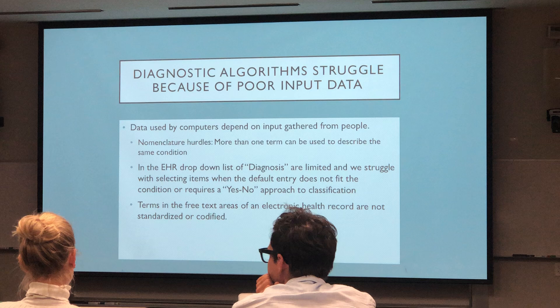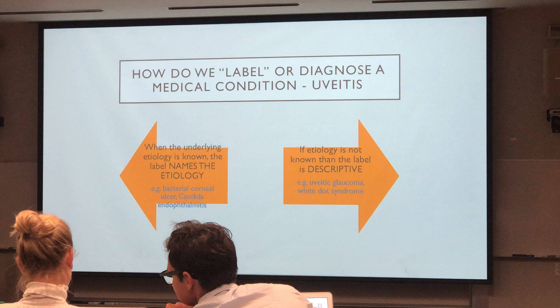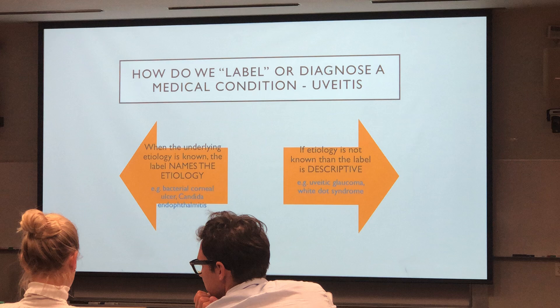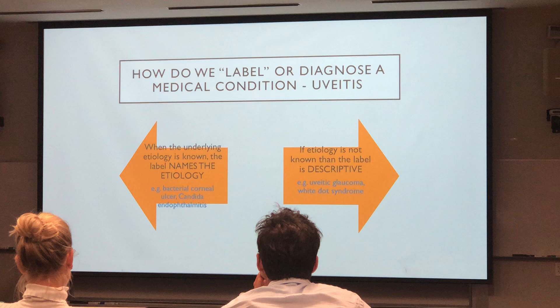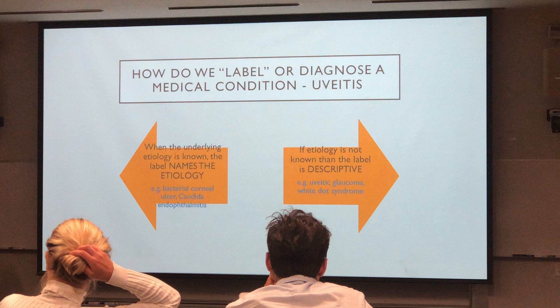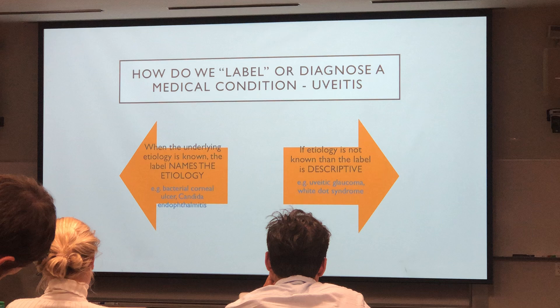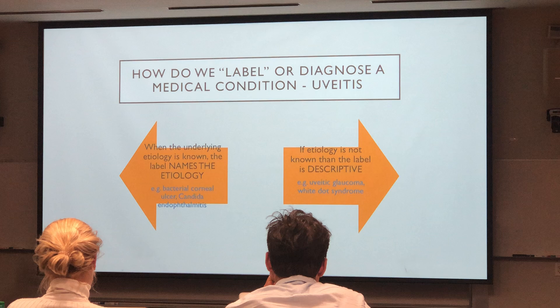So when we make a diagnosis of UBIDs, how do we label a condition? I like to categorize the labeling process in two forms. There's a group of UBID entities where we presume we understand the underlying etiology — we'll say this is a bacterial chorioretinal ulcer, or this is a Candida endophthalmitis. Unfortunately, most of UBIDs, we don't know the underlying etiology, and so our diagnosis of UBIDs is really descriptive.